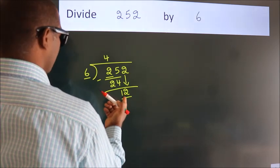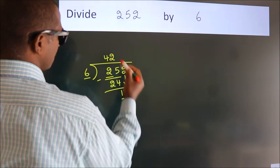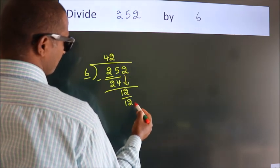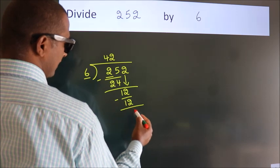When do we get 12? In the 6 table, 6 times 2 equals 12. Now we subtract. We get 0.